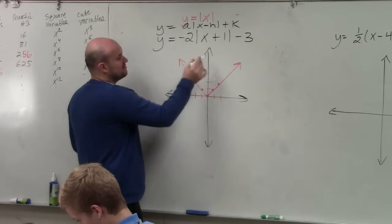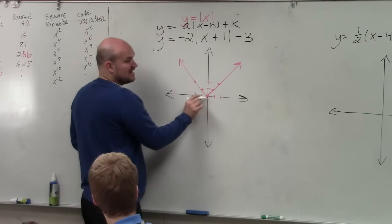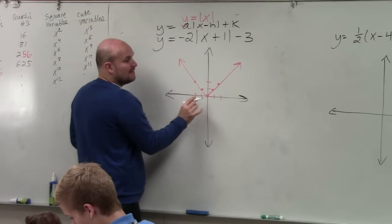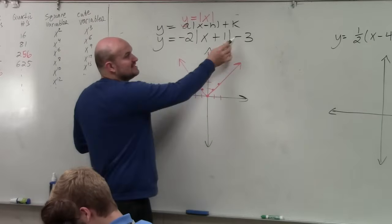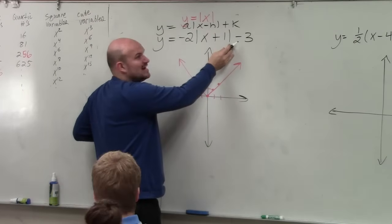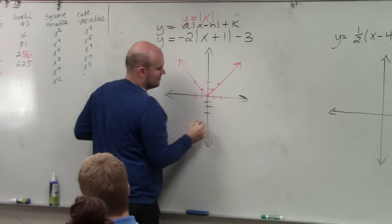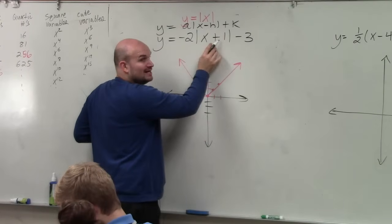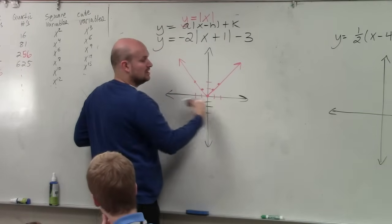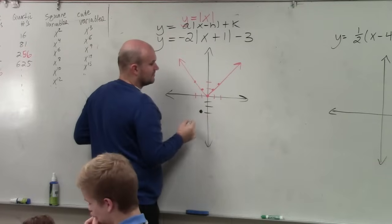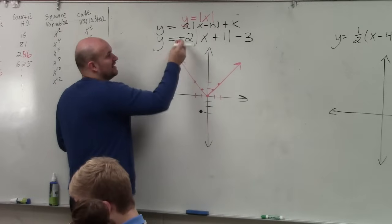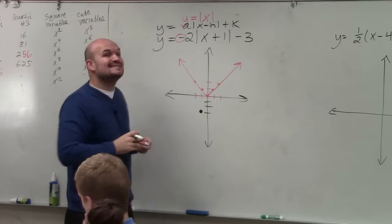So the first thing we notice is the vertex. The vertex is the lowest point here on this graph. That was the point h,k. So we can see the minus 3. What is that doing to the graph? That is now shifting the graph down 3. Then plus 1 is shifting the graph to the left one. And then the other important thing that I didn't say, but it's important, is it's negative.